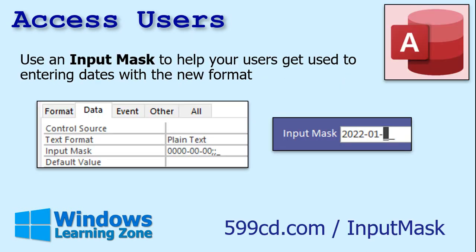If you want some enforcement and help in getting used to typing in the new date format, set up an input mask in your fields. This way your users have to input the data that way — they have to type in exactly 2, 0, 2, 2, 0, 1, 2, 2, or whatever. I have a whole separate video on input masks — there's the link right there, and you'll find it down below in the link section.